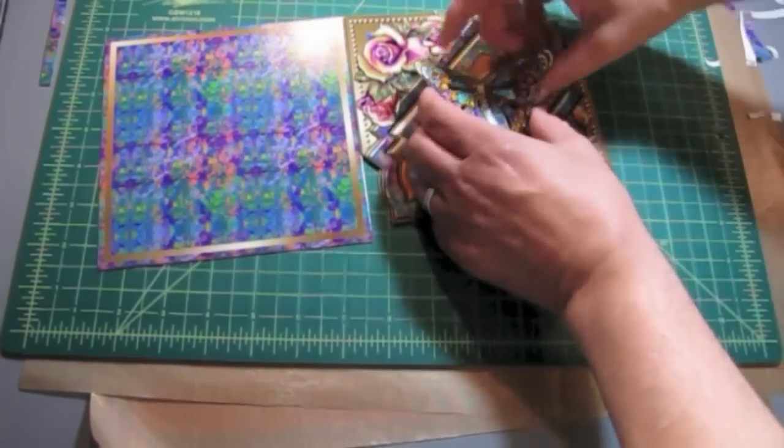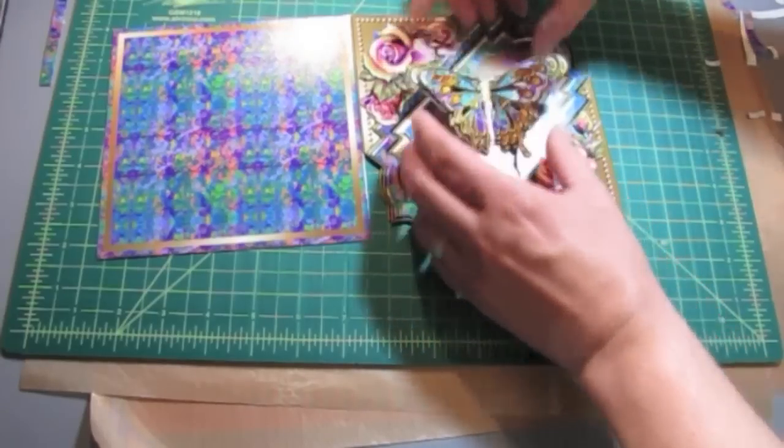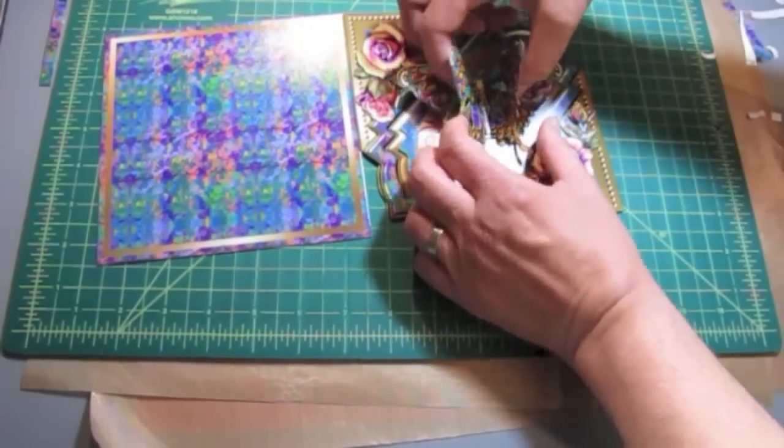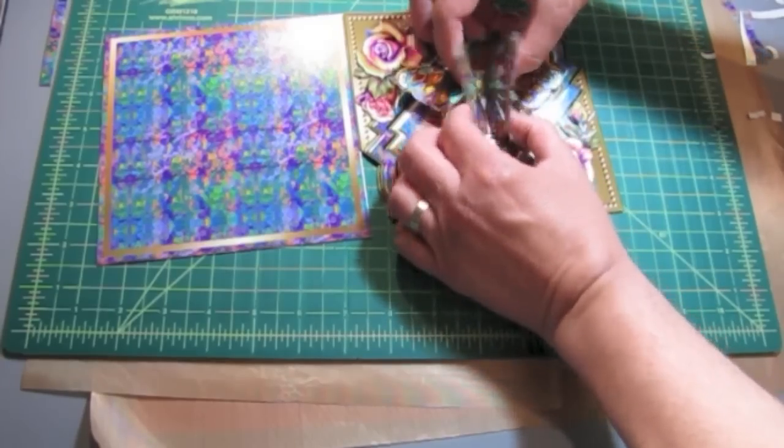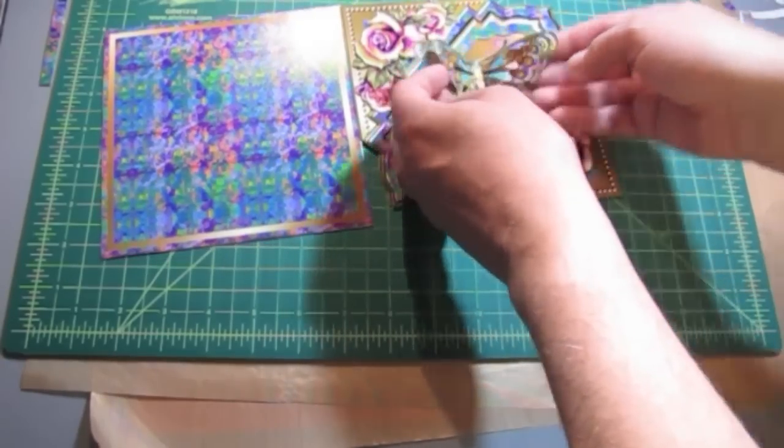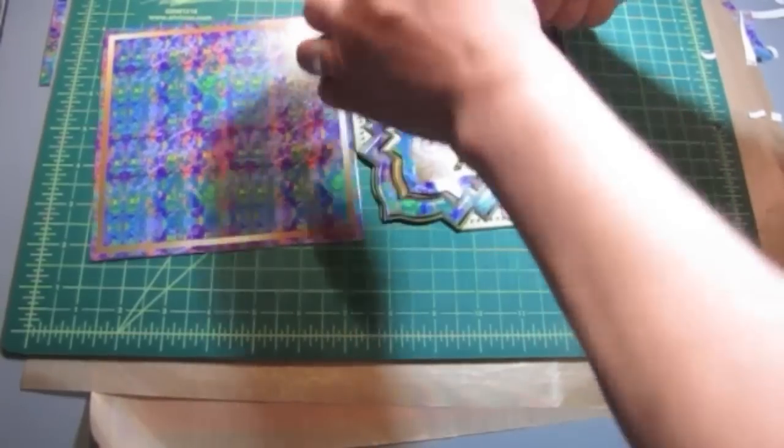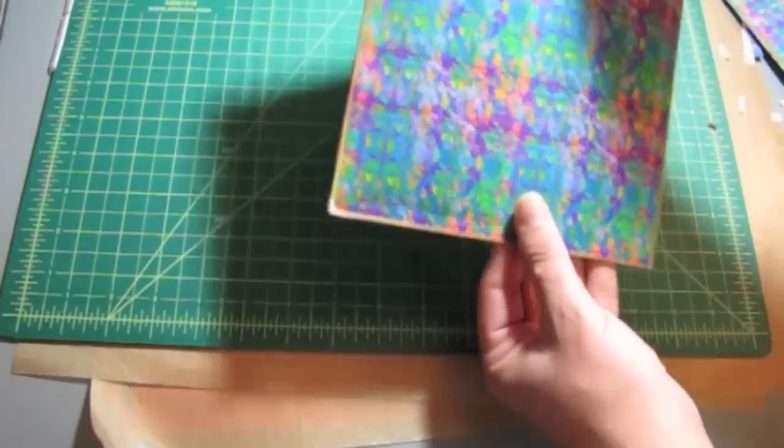Okay. So just kind of bend up the wings a little bit on here. Now you can, if you wanted to, before you place this on here, you could score them, but I like a little bit more of an organic feel to it when you just kind of finger fold it. And there you have it.